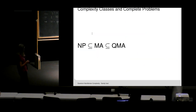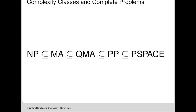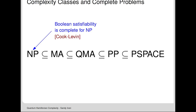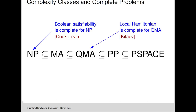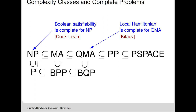Here's the complexity picture: NP sits inside MA — a classical verifier is a special case of a probabilistic one. Probabilistic sits inside QMA, which sits inside PP — the class where the verifier accepts with probability greater than or less than a half but without a promise gap. All of this sits inside polynomial space. Boolean satisfiability is complete for NP, and local Hamiltonian is complete for QMA. The counterparts without witnesses are polynomial time, quantum polynomial time, and randomized classical computation.